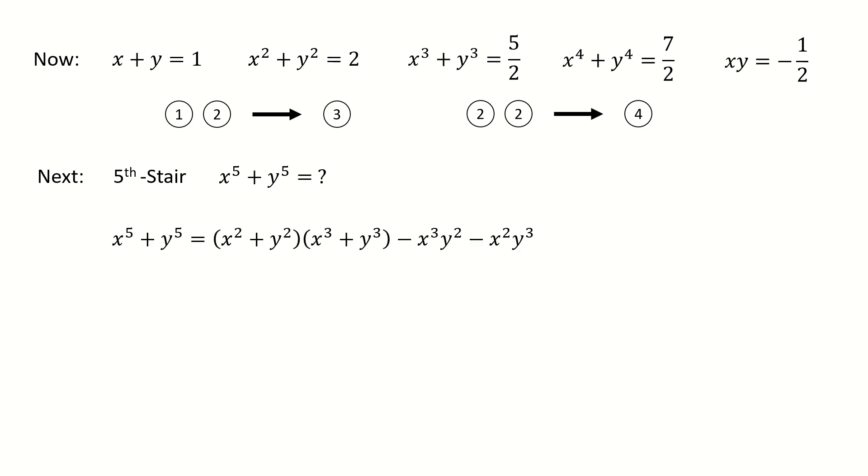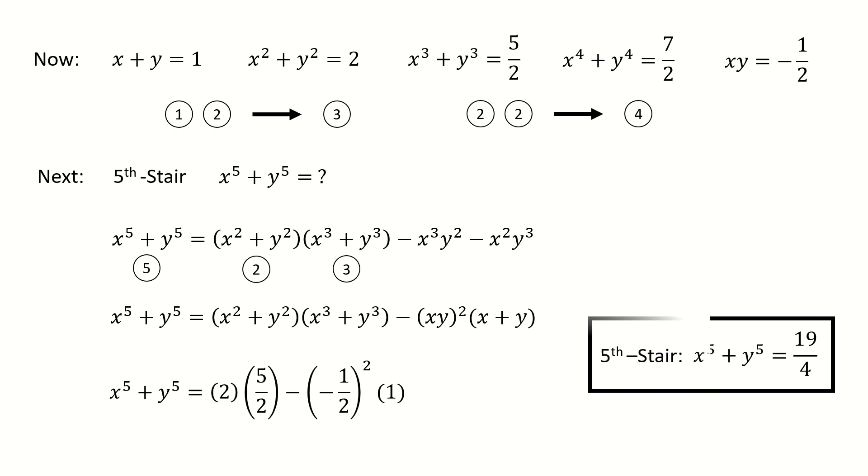By the same idea, we break down oval 5 to the product of oval 2 and oval 3, subtracted by cross terms. Next we factor the cross terms and plug in numbers. So we got stair 5. Now let's take a break.